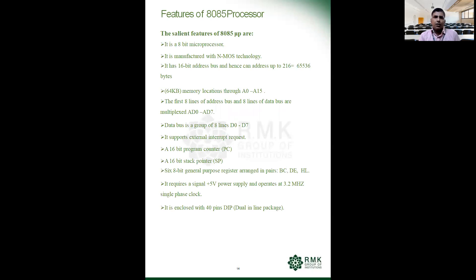It has a 16-bit address bus, which means it can address up to 2 to the power of 16, that is 65,536 bytes or 64 kilobytes of memory. It addresses 64 kilobytes of memory locations through separate pins A0 to A15, out of which AD0 to AD7 — the lower order address — is multiplexed. It has exclusive address lines for the higher order address, that is A8 to A15. The first eight lines of the address bus and eight lines of the data bus are multiplexed, which is AD0 to AD7.